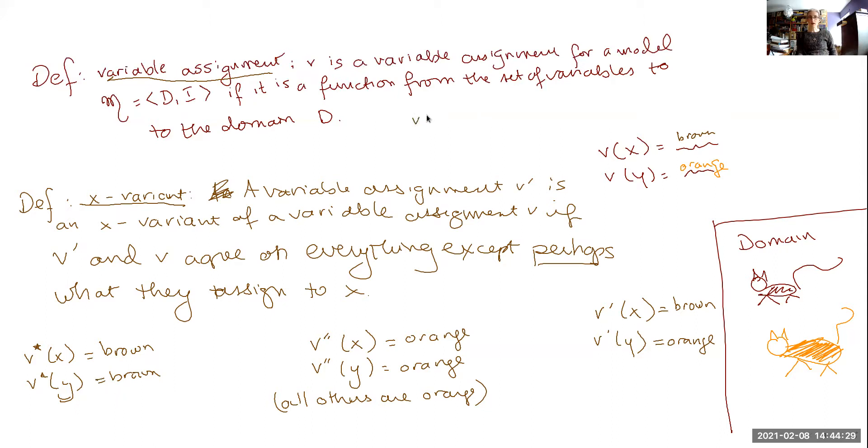Let me try just one more example. This is going to be v double star, and this assigns x to the orange cat and y to the brown cat. Now, if you compare v and v double star, neither is an x variant of the other, and neither is a y variant of the other. And that is because more has changed than just possibly what has been assigned to x and what has possibly been assigned to y.